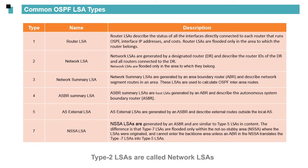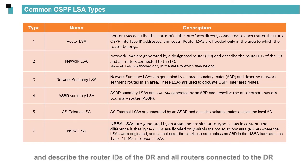Type 2 LSAs are called Network LSAs. They are generated by the Designated Router (DR) and describe the router IDs of the DR and all routers connected to the DR.